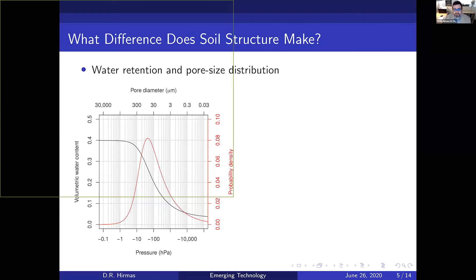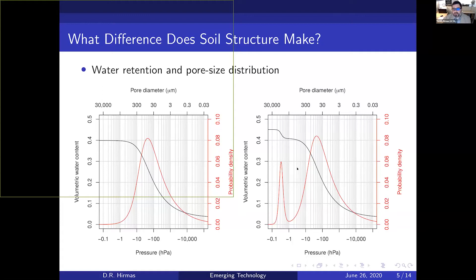Under structured conditions, we get a bump at the wet end of the curve. The consequence of aggregating particles together is that it creates very large pores. That's because as we cluster the particles together, we get larger pore spaces between those clusters.